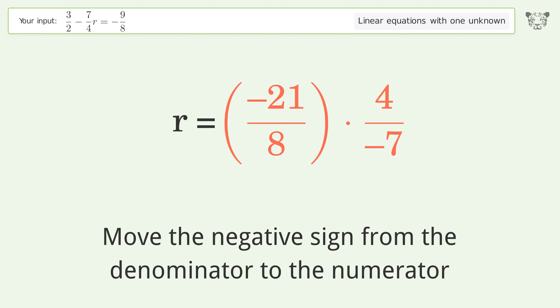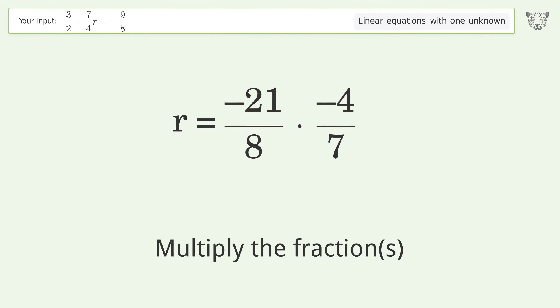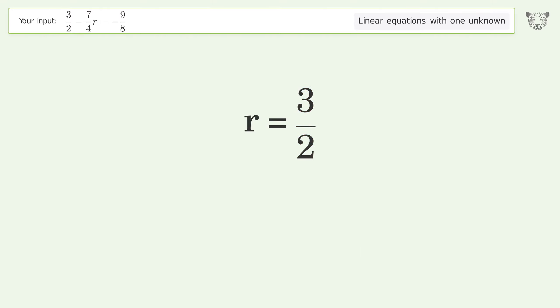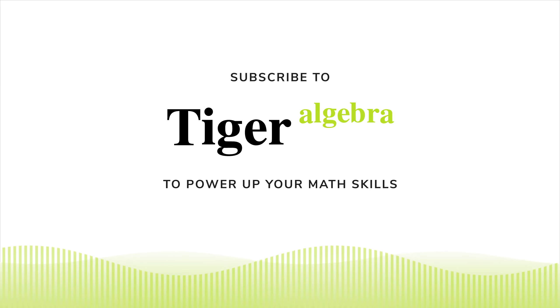Move the negative sign from the denominator to the numerator. Multiply the fractions. Multiply the fractions. Simplify the arithmetic. And so the final result is r equals 3 over 2.